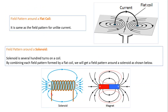Now we talk about field patterns around a flat coil. There is a flat coil passing through a plane. On the left-hand side, the current is upward — flowing out of the plane — so the magnetic field is anticlockwise. On the right-hand side, the current flows downward into the plane, so the magnetic field is clockwise. In both wires of the coil the direction of the magnetic field is the same, resulting in strong repulsion. You need to remember this field pattern, as the examiner has asked about it.